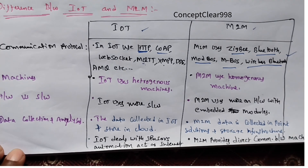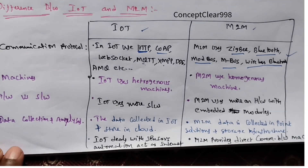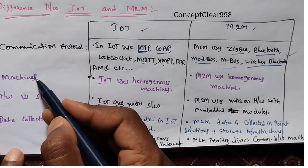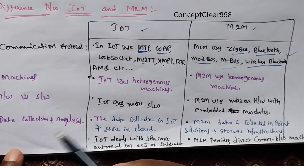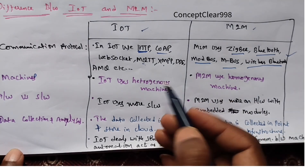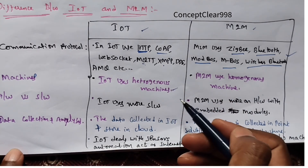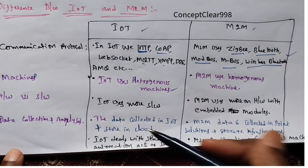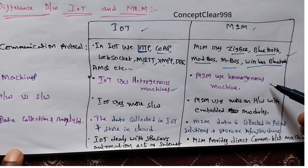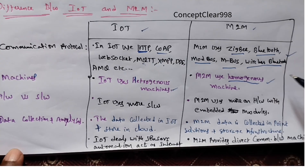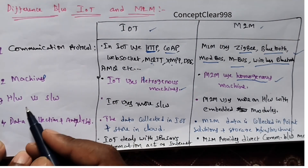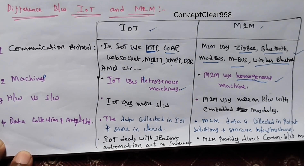The second aspect is the type of machines used. In IoT, we use heterogeneous machines — all machines are heterogeneous. In M2M, we use homogeneous machines.